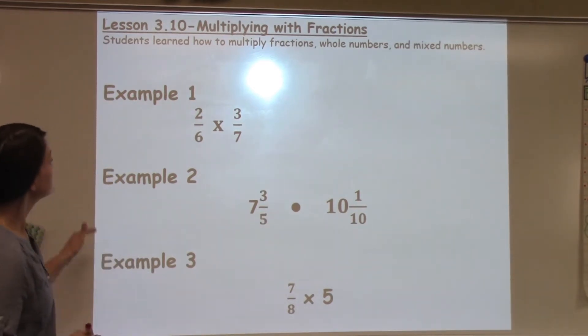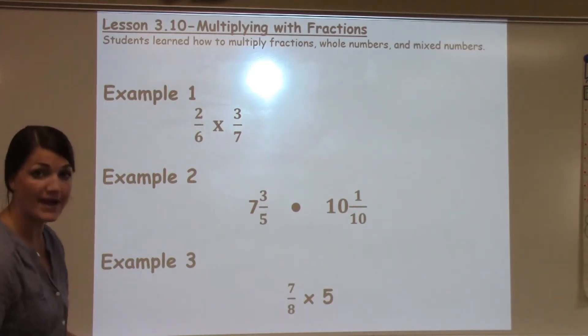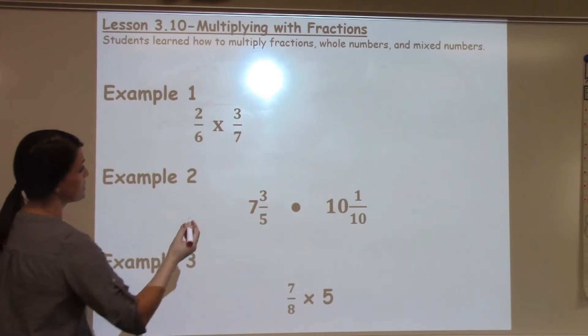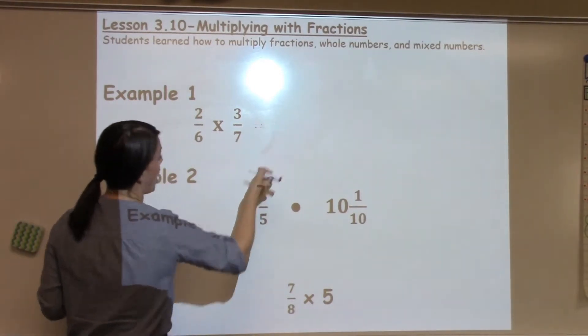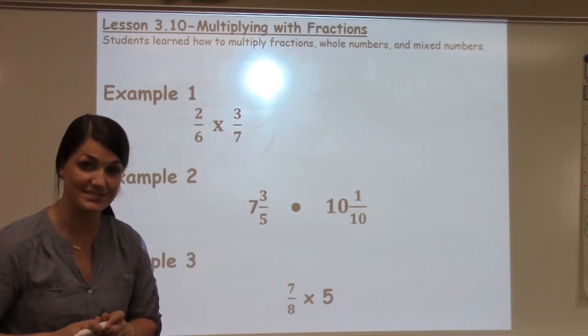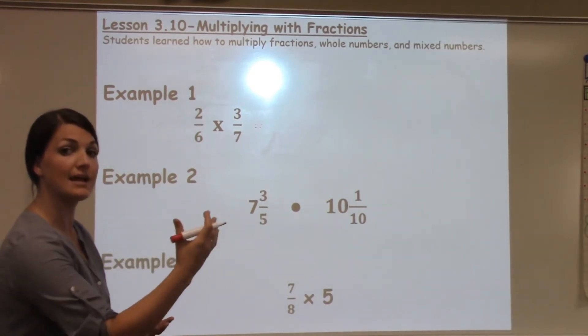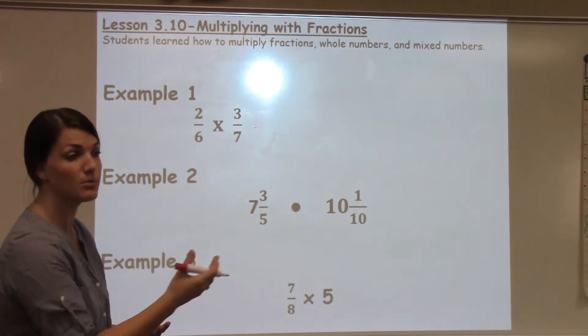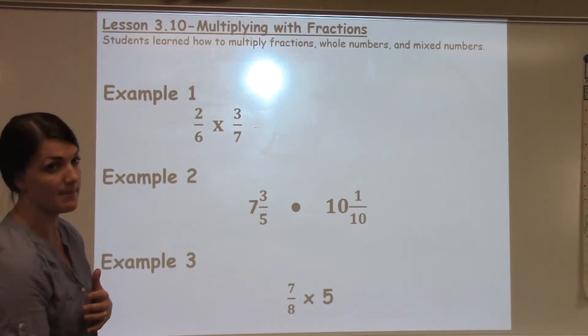Example 1 just has a fraction, a regular fraction, times another fraction: 2/6 times 3/7. All I do when I multiply fractions, I do not have to make the denominators the same. So I just multiply numerator times numerator, top times top, and denominator times denominator, or bottom times bottom.